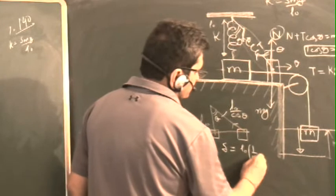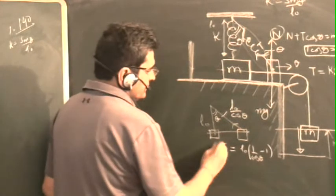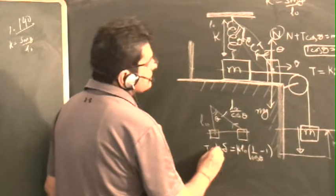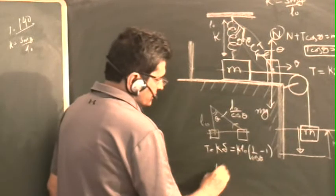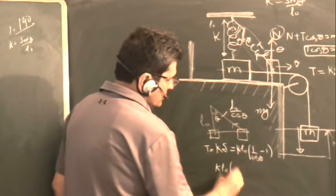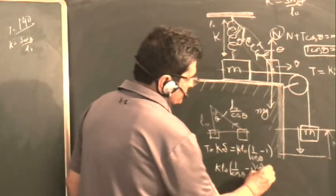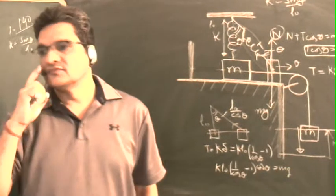So the extension delta is L0 upon cos theta minus L0. And K delta would be the tension. We know T cos theta is equal to mg, so K L0 times 1 upon cos theta minus 1, into cos theta, is equal to mg.